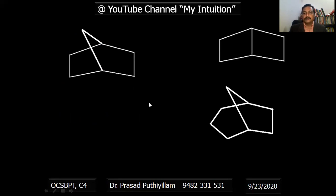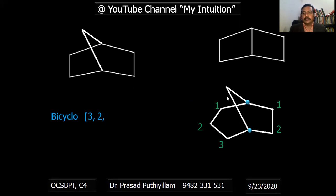Another example: the bridged carbon atoms are these two. Numbering gives two carbon atoms on one side, but the other side has three — one, two, three — and first preference is given to the longest chain. So we write bicyclo[3.2.1]. Total carbons: three plus two plus one plus two equals eight — octane. This is how we give nomenclature to bicyclo compounds.